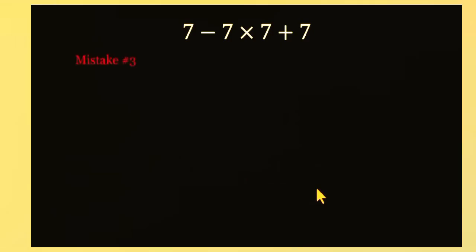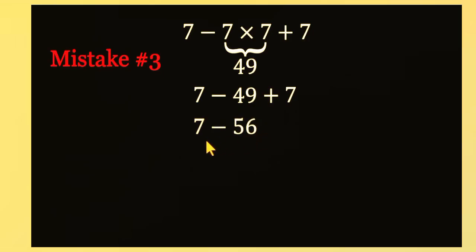And the third mistake. The bold but blunt one. They start strong with multiplication. 7 times 7 equals 49. Then they add 49 and 7 to get 56. Finally, they subtract that from 7 and end up with negative 49. Closer, but still not right.